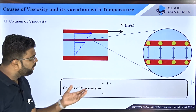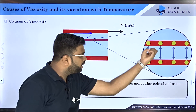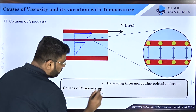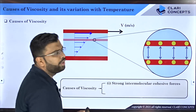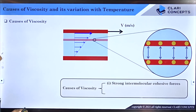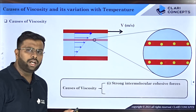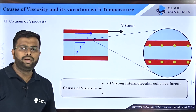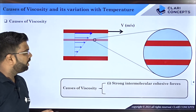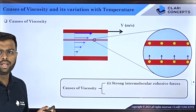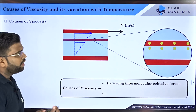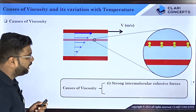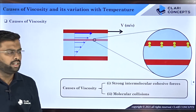The molecules of the bottom layer will try to attract and resist the motion of the molecules of the top layer during fluid motion. So one major cause of fluid viscosity is strong intermolecular cohesive forces. Additionally, all these molecules are moving randomly in the fluid, and there are very high chances that molecules of the top layer can come into contact with the second layer and interact, or molecules of the bottom layer can interact with the top layer. These collisions are also another reason for resistance to flow, and that is why molecular collisions contribute to fluid viscosity.